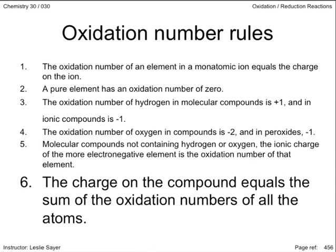Rule number six. The charge on the compound equals the sum of the oxidation numbers of all the atoms. The sum of the oxidation numbers of all the atoms in a neutral compound is zero. In a polyatomic ion, the oxidation numbers should add up to the charge of that ion.